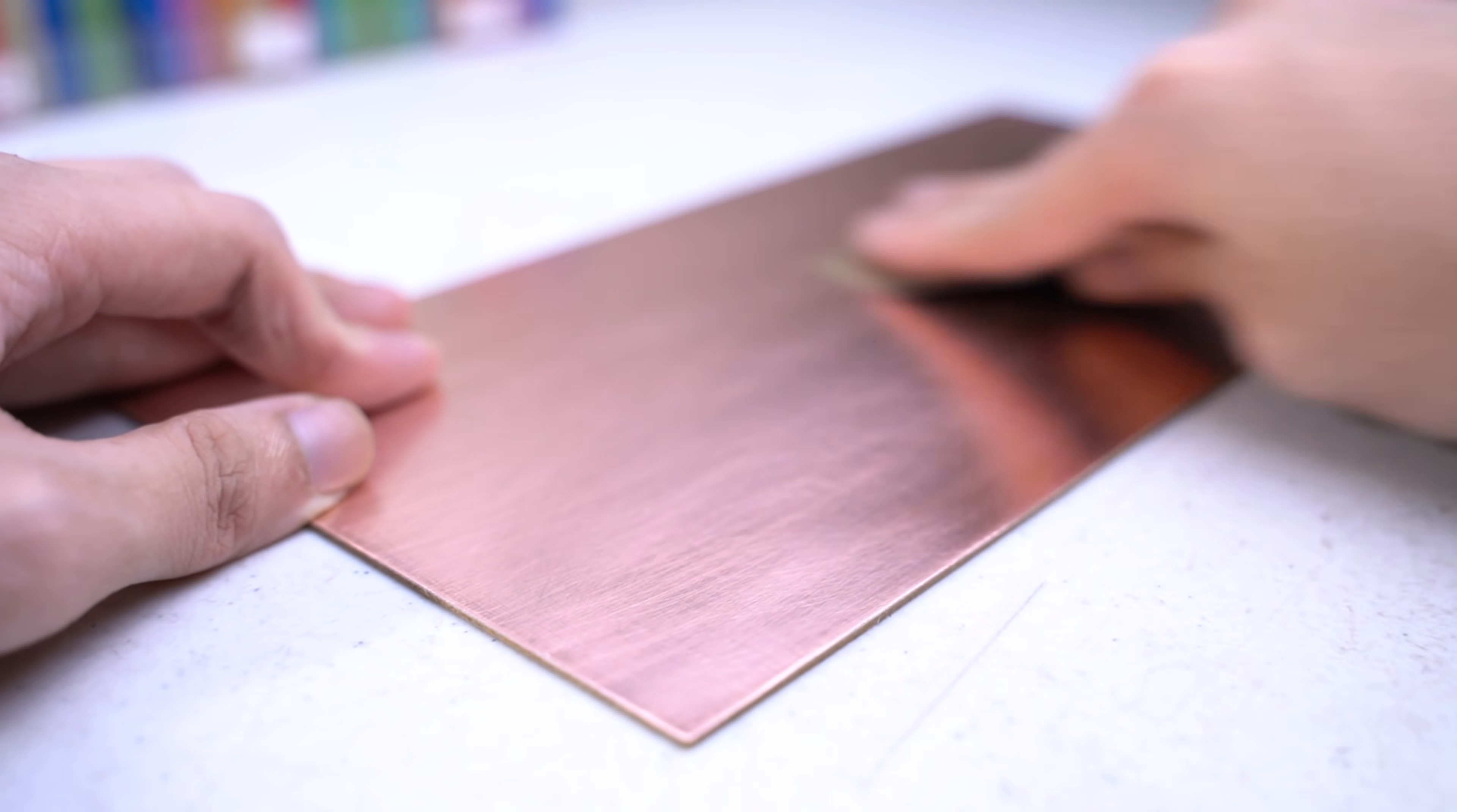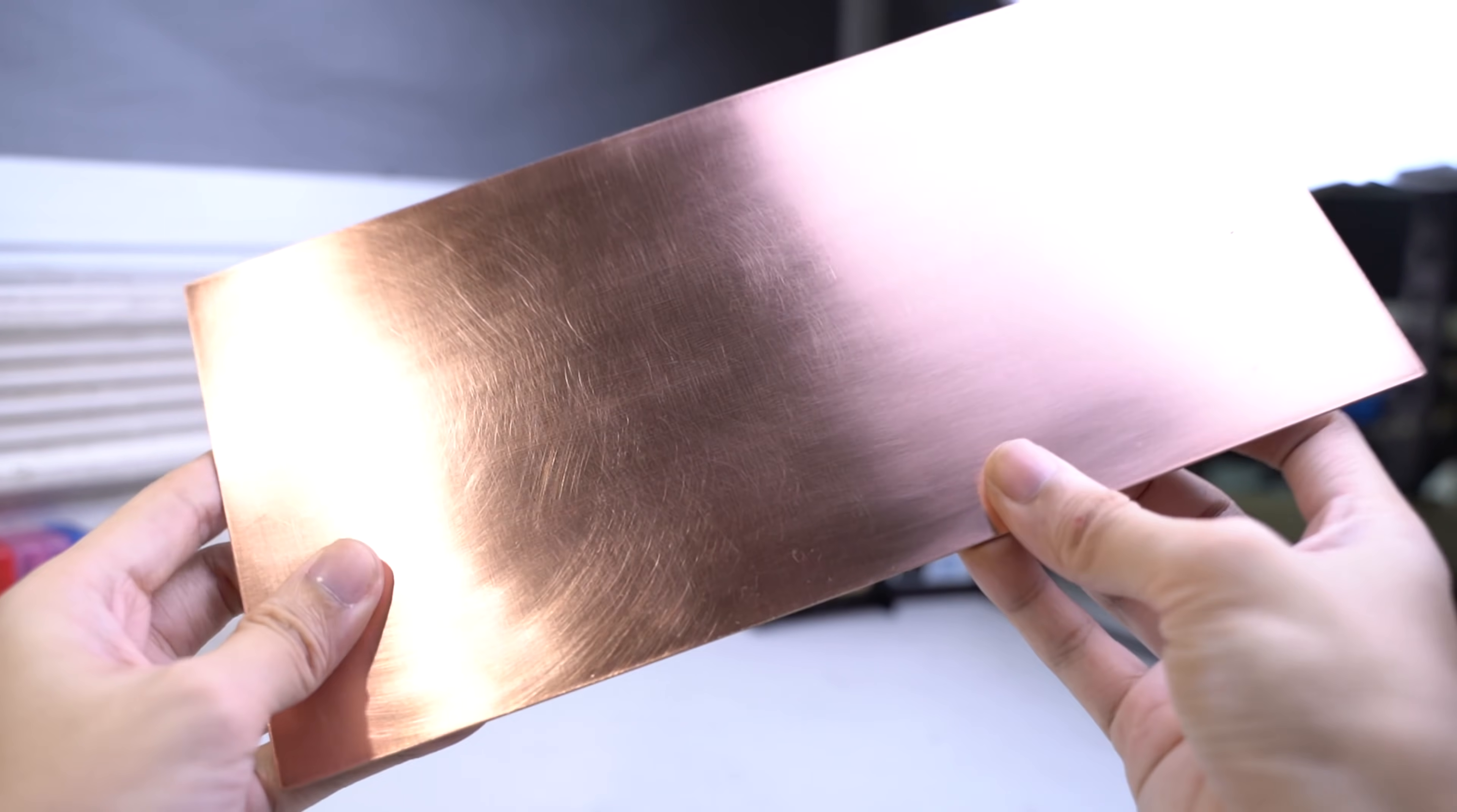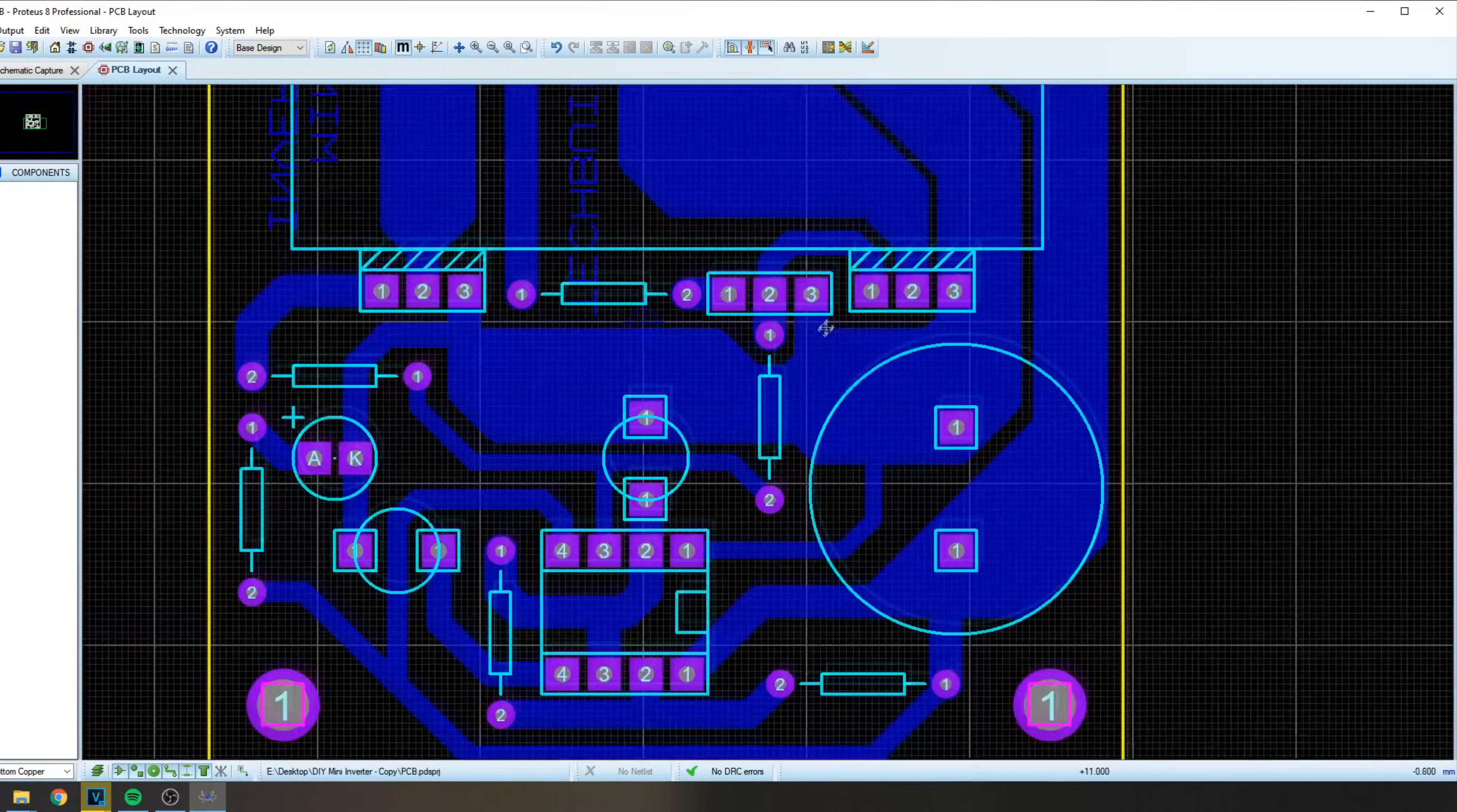Don't overdo it as you would make the copper layer a lot thinner. Use some alcohol and a piece of cloth to remove the residual particles. And now you have a clean copper clad.